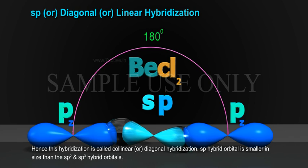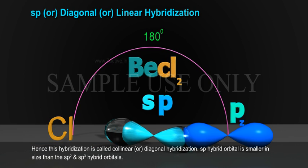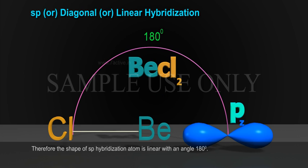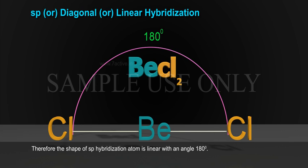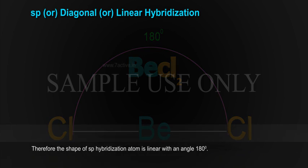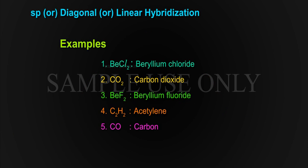SP hybrid orbitals are smaller in size than SP2 and SP3 hybrid orbitals. Therefore, the shape of an SP hybridized atom is linear with a bond angle of 180 degrees.